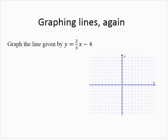So I see that this is in slope-intercept form, and that the slope is two-thirds, and that the y-intercept is the ordered pair (0, negative 4).